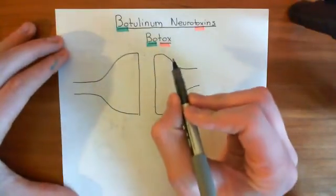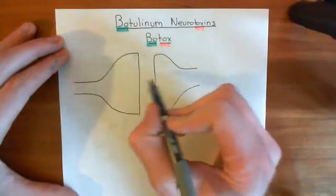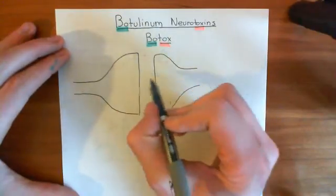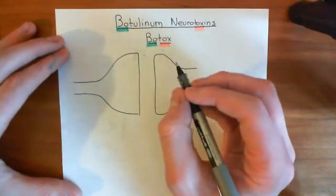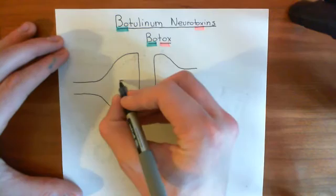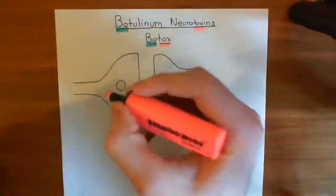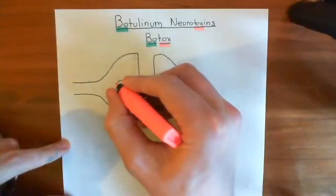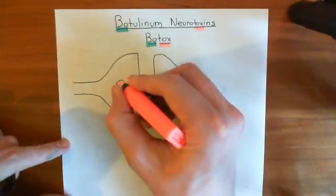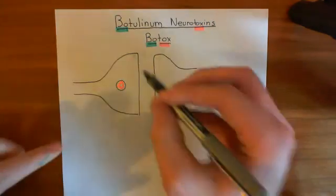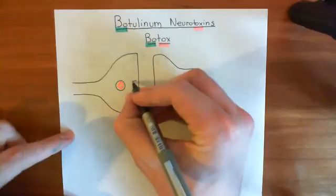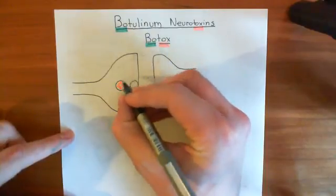SNARE proteins are extremely important in the release of neurotransmitter from the presynaptic neuron onto the postsynaptic neuron. Let's say we have a vesicle that is full of neurotransmitter. What we're going to discuss is how we dock this synaptic vesicle onto our presynaptic membrane so that it's readily releasable when an action potential comes along.